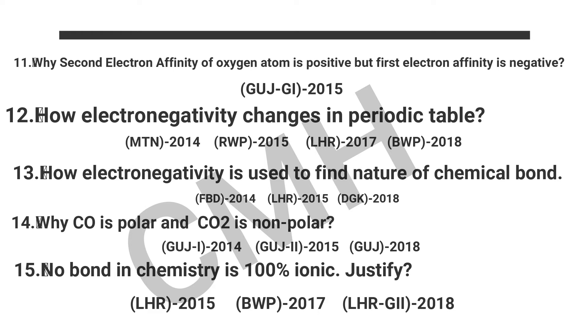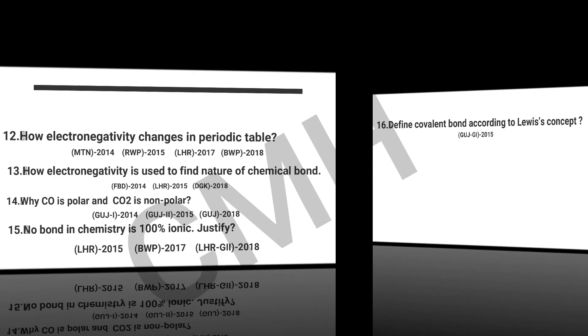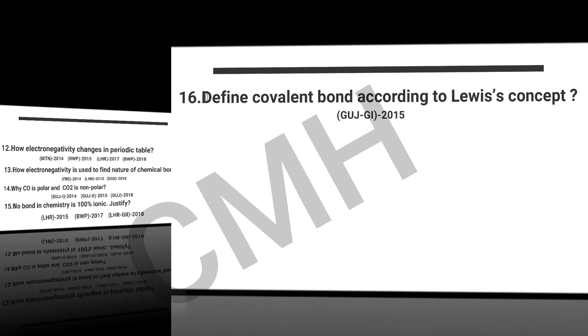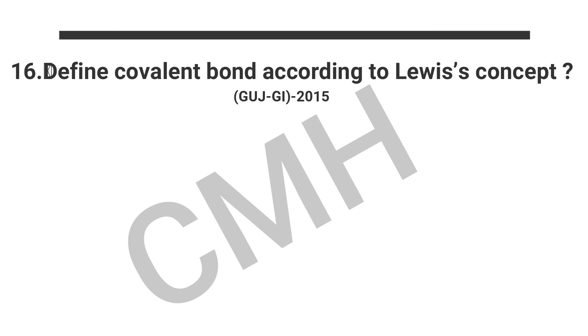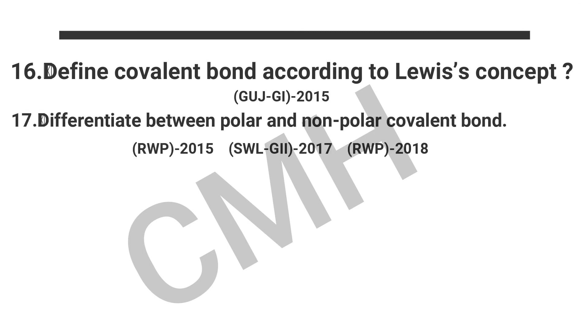Question number 15 continued: No bond in chemistry is 100% ionic — justify. Question number 16: Define a covalent bond according to Lewis's concept. Question number 17: Differentiate between polar and non-polar covalent bonds.